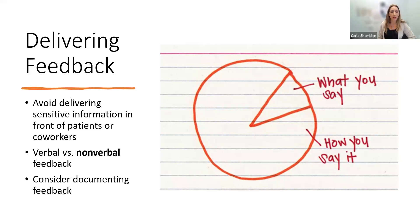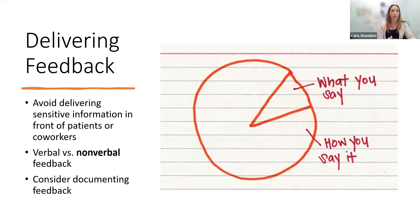A lot of times we give students verbal feedback, and I hear all the time students saying their preceptor never gave them any feedback, when really the preceptor was giving them feedback on a daily basis — it was verbal, and students often didn't pick up that that's what was going on. Documenting the feedback can be helpful for the student to see in writing what you're saying — areas they need to improve upon or what things they're doing well. It can also be helpful for programs to receive, especially if a student is having difficulty on rotation.